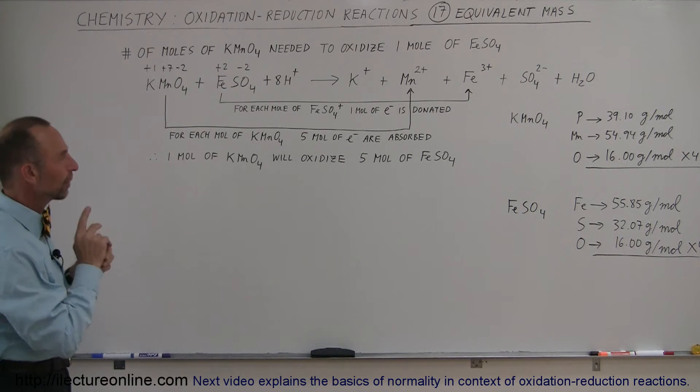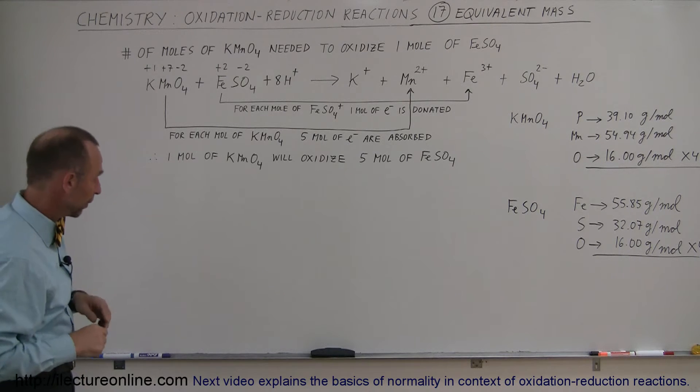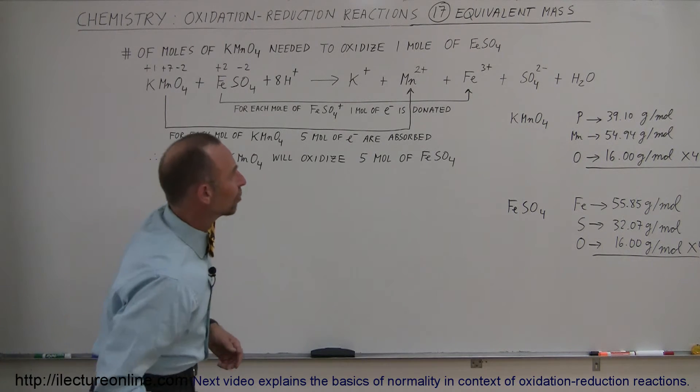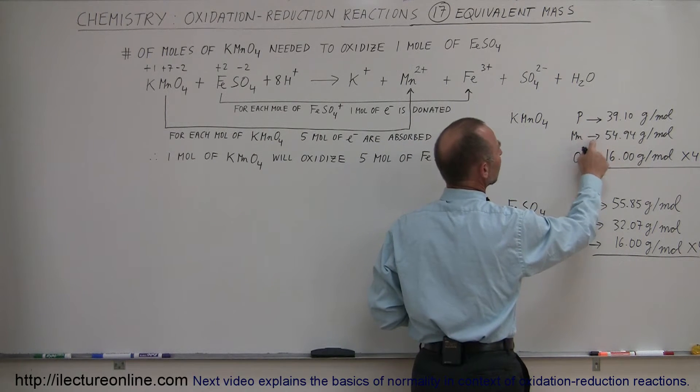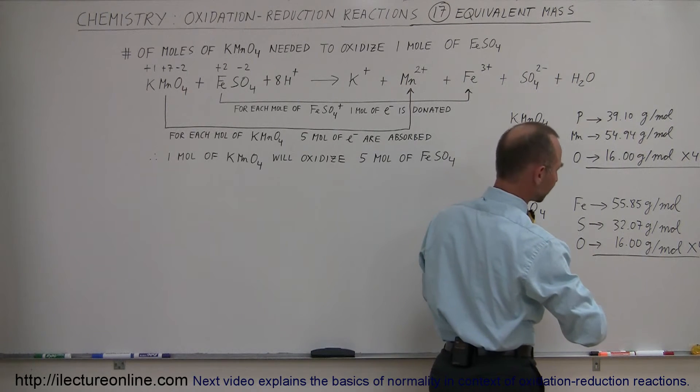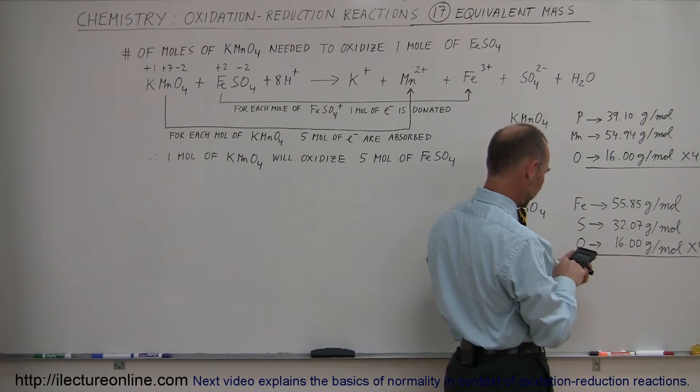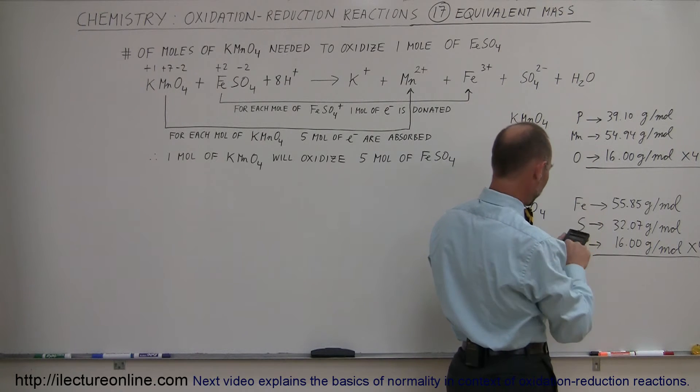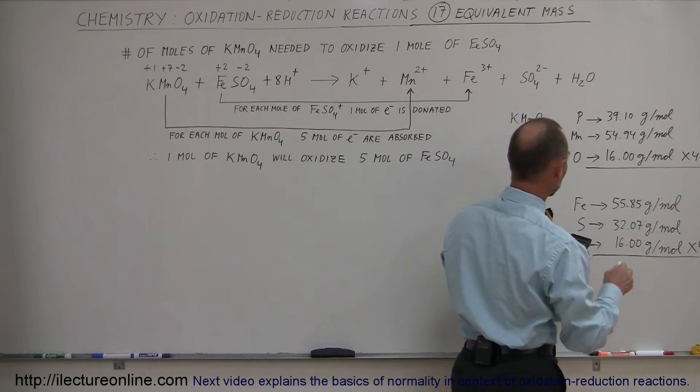What we're going to do in order to figure that out is find the molar masses of each of these two molecules. Here we have potassium permanganate: the potassium molecule, the manganese molecule, and four oxygen molecules. So per mole, 16 times 4 plus 54.94 plus 39.1, we have a mass of 158.04 grams per mole for the potassium permanganate.